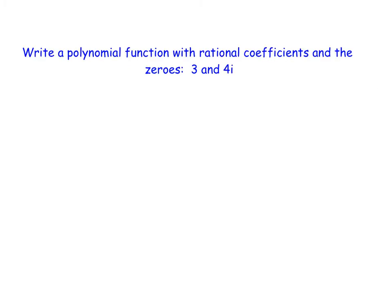Let's try an example. This problem states that we need to write a polynomial function with rational coefficients that contains the zeros of 3 and 4i. While 4i isn't written in the form a plus bi, it really is zero plus 4i. Because this is an imaginary zero, we use the complex conjugates theorem, so our other zero is zero minus 4i. We need to account for 3, 4i, and negative 4i.